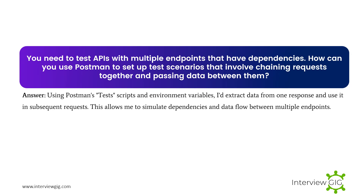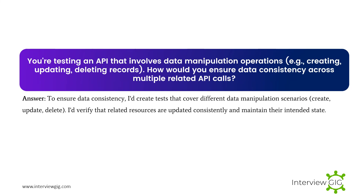You need to test APIs with multiple endpoints that have dependencies. How can you use Postman to set up test scenarios that involve chaining requests together and passing data between them? Using Postman's test scripts and environment variables, I'd extract data from one response and use it in subsequent requests. This allows me to simulate dependencies and data flow between multiple endpoints.